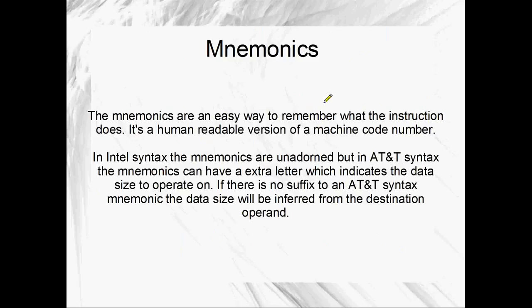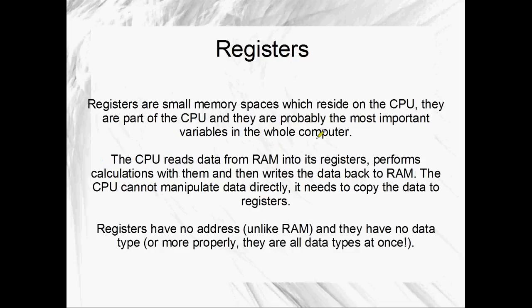Mnemonics are just an easy way to remember what the instruction does - a human-readable version of a machine code number. We don't want to remember machine code, so we remember mnemonics instead. In Intel syntax, the mnemonics are unadorned. But in AT&T syntax, they have an extra letter which indicates the data size to operate on. You might have seen that little L on the side of the mnemonic for the AT&T syntax MOV on the previous slide - that means long. B means byte, W means word or two bytes, L means long, and Q means quad word. Those are the suffixes for AT&T syntax - we'll see a lot more of them, they're pretty easy.